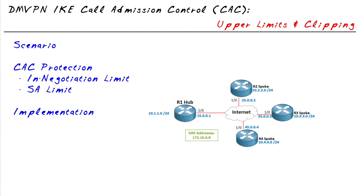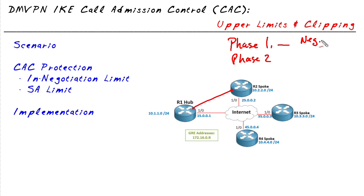In the original flavor of IPsec, which we call IKE Version 1, there are actually two phases that systems go through to establish a secure VPN tunnel between devices. We have Phase 1 and Phase 2. In Phase 1, we negotiate details regarding an IKE Phase 1 tunnel. An acronym that can help us remember what they're negotiating is HAGLE, which represents the hashing, the authentication, the Diffie-Hellman group, the lifetime, and the encryption we're going to use.